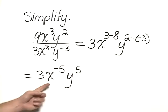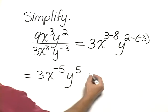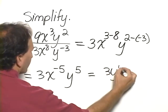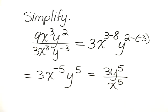Again, we do not want to leave negative exponents, so we would rewrite our answer as 3y to the 5th over x to the 5th. Thank you.